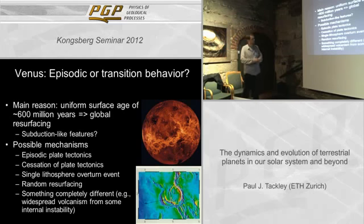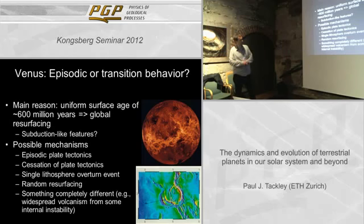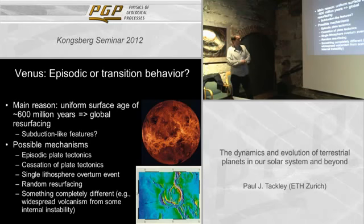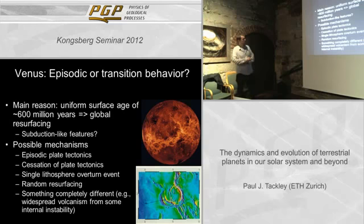Some people have proposed that there may be some type of subduction taking place on Venus today, because parts of the surface show features that look very much like subduction zones at the surface of Earth — suggesting incipient or localized subduction. But these things are by no means certain.